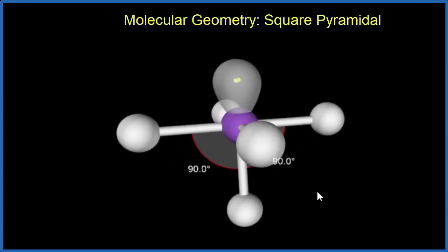We could also look at the electron geometry, where we take into account this pair of electrons here as well. That would be octahedral. So we have a molecular geometry of square pyramidal, just like we found on our table.